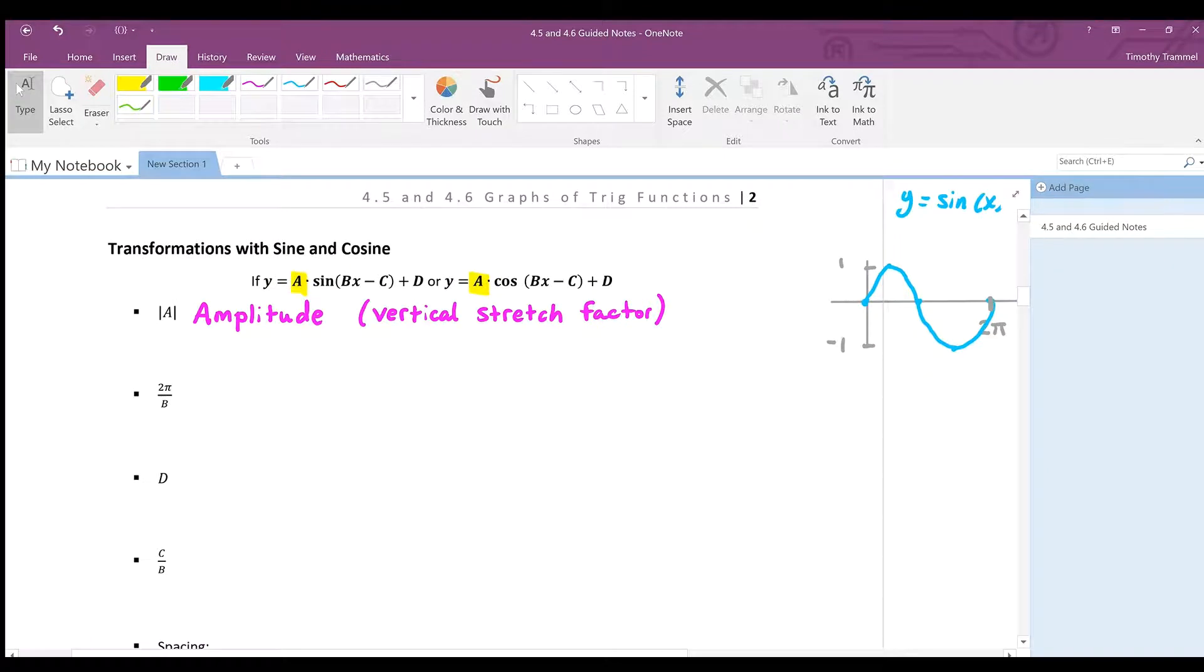And so that's all this is over here. It's the period. And the reason that it's 2 pi over b is 2 pi is kind of like our standard period, right? That's what the period of sine of x and cosine of x is. And if you put a 2 in front of the x, right, it's going to cut the period in half. So that 2 actually is going to go down here.